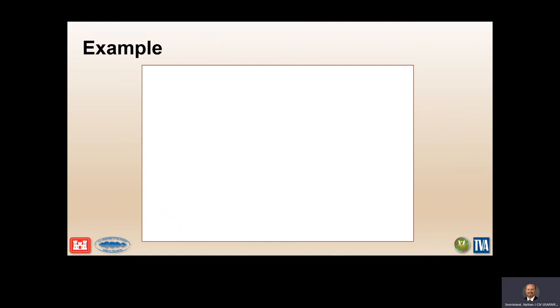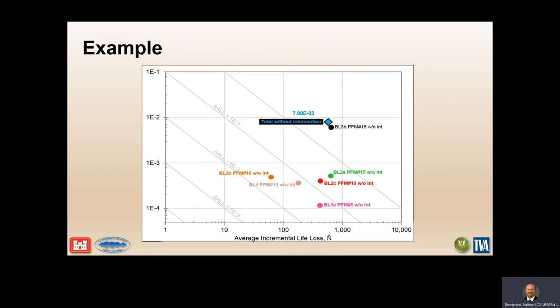Here's a brief example using an FN chart for a particular structure. Each individual failure mode is plotted individually. You can see the 1-in-1,000 societal risk line, the 1-in-10,000 individual risk line, and many failure modes plotting in the unacceptable region — they sum to a total point shown on the chart. In the Corps' case, we'd discuss how to take action to reduce some of these failure modes, or study them further to verify whether the risks are really where they're plotted. We also plot results with and without intervention, and we manage our program with intervention.